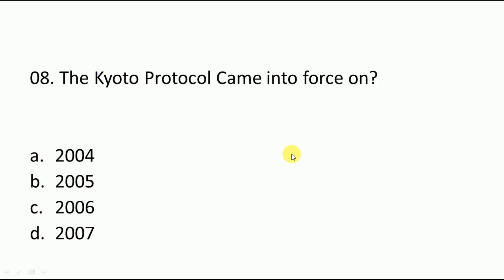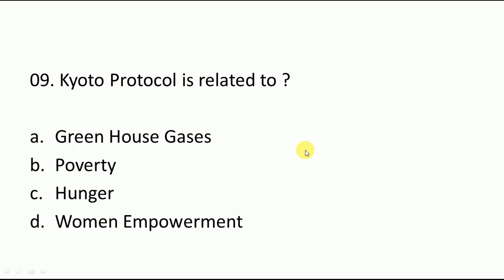Kyoto Protocol came into force — when did it come into force? You have to tell. The correct answer is 2005. Its deadline has now ended on 31st December 2020. It was extended up to 2012, then further extended to 31st December 2020. The Kyoto Protocol is related to emission of greenhouse gases — greenhouse gases is the correct answer for this question.